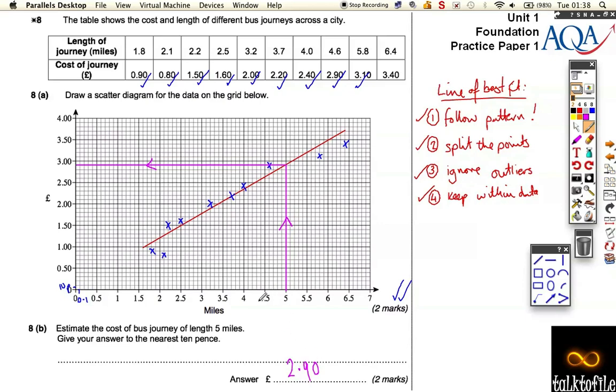So that's going to be the cost of a bus journey that's 5 miles long, according to our information on our line of best fit. Go back and have a look at that. It took a little while to plot the points, but it's worth going over it again and again. Being accurate and being neat is really important on these type of questions, and you lose marks if you're not.